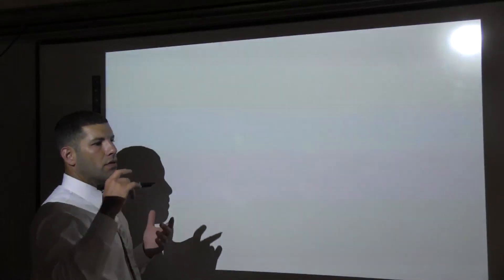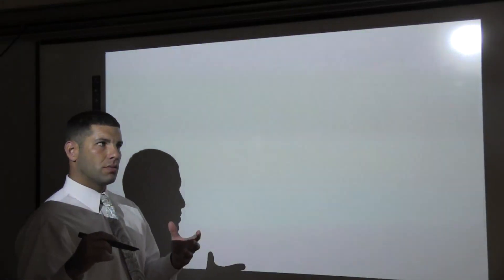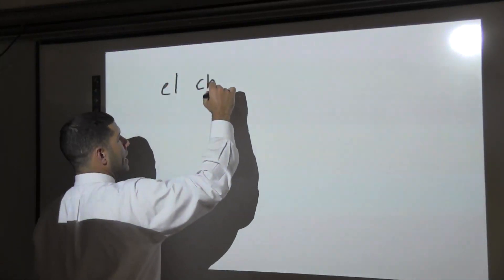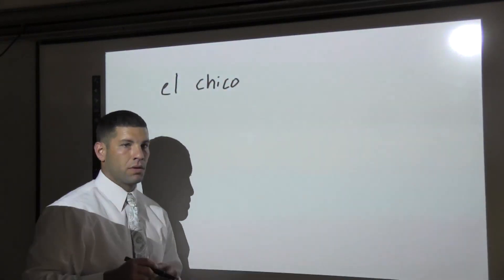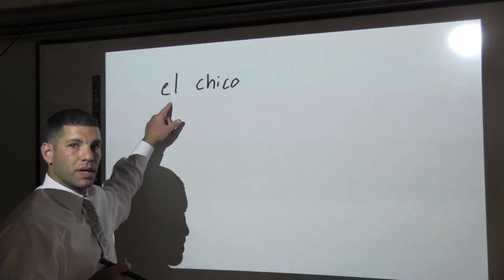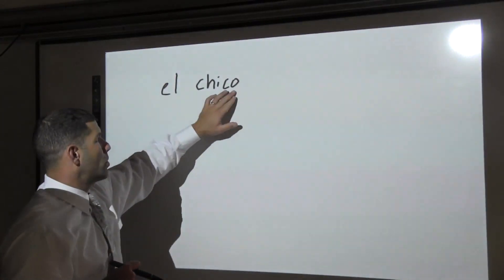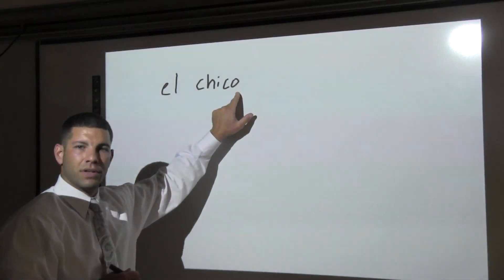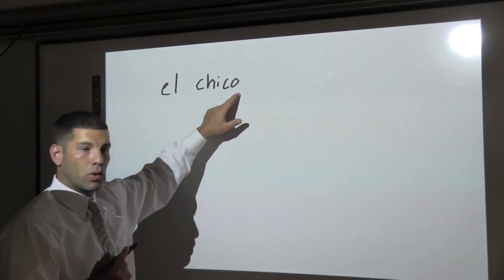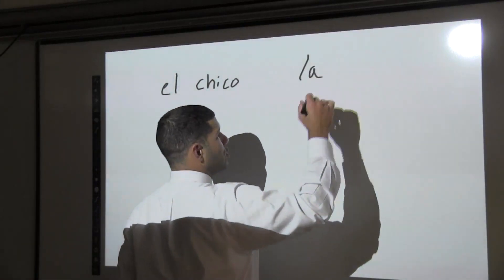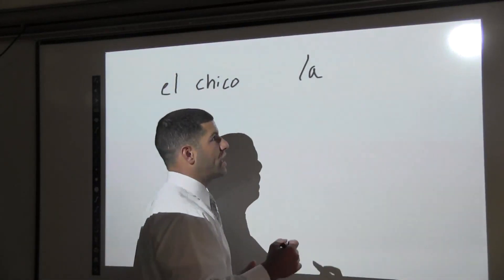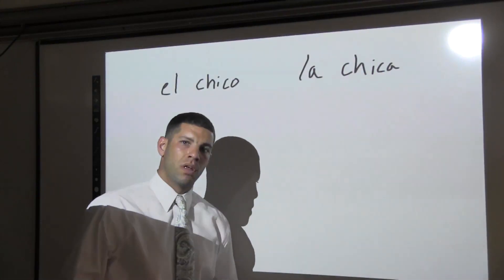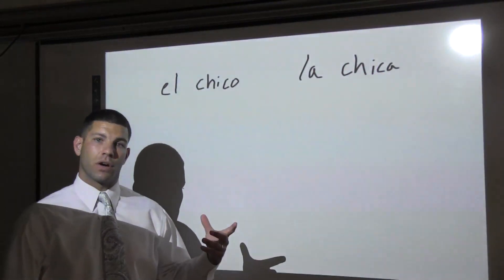Most generally, you can look at a noun like el chico. That starts with 'el,' so we know it's masculine, but it also ends in an -o. Typically when a noun ends in -o, it means it's masculine — el chico, the boy. Certain nouns can be changed for gender; you can do this with animals, with people, things like that. So la chica would be the girl.